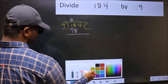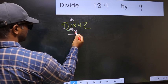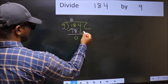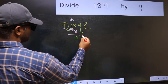Now we should subtract. 18-18 is 0. After this, bring down the beside number. So 4 down.